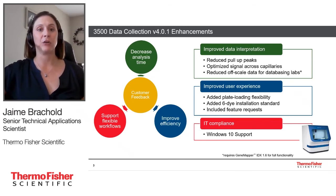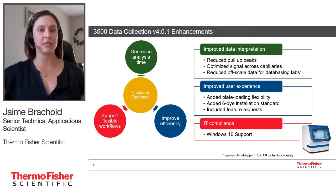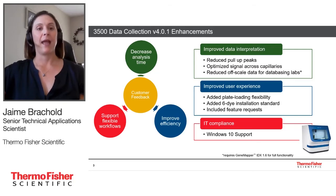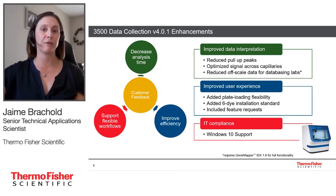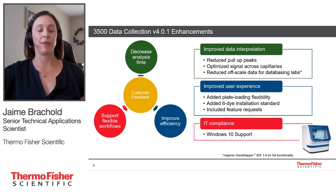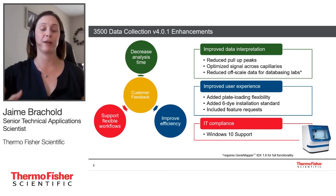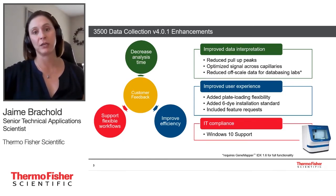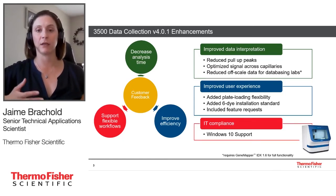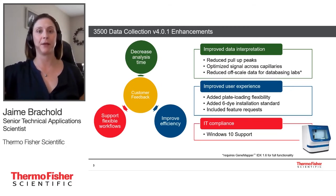Let's get started talking about the new enhancements in the 3500 data collection software version 4.0.1. After taking in a lot of customer feedback since we first released the 3500, we were able to include some great benefits with this newest version. As it relates to improved data interpretation, we introduced an algorithm that will reduce pull-up peaks for Applied Biosystems chemistry — this will be covered in more detail in the upcoming slides.